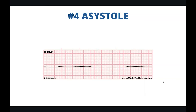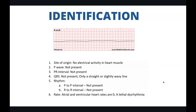Number four, we have asystole, which is a lack of electrical activity in the heart muscle. It's essentially a flat line — there's no electrical activity and no waves on the EKG. The site of origin — there is no site of origin. There's no P wave, no P to R interval, no QRS, only a straight or slightly wavy line. There is no P to P interval, no R to R interval, and the atrial and ventricular heart rates are both zero.